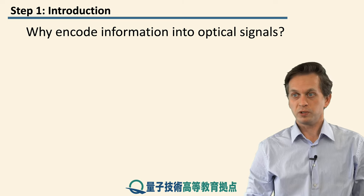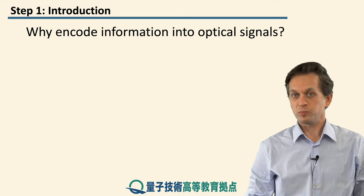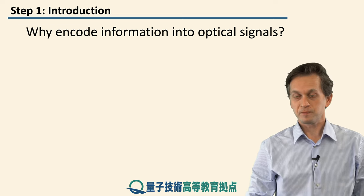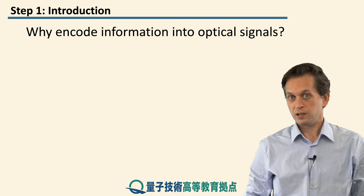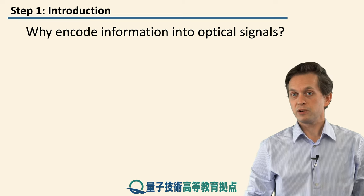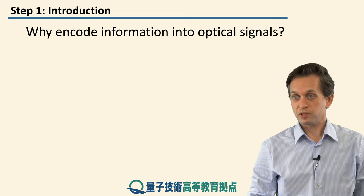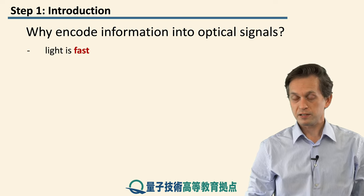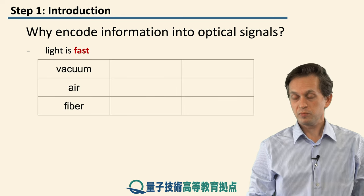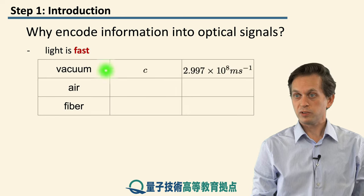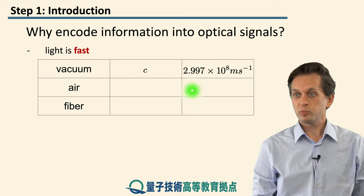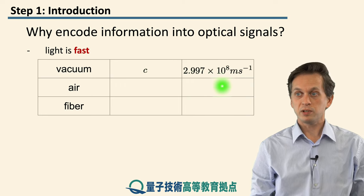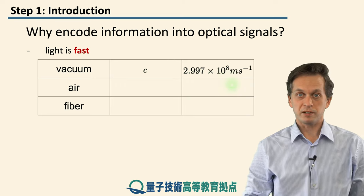Why do we want to encode information as optical signals? Well, for one, light is a very good carrier of information because it's fast. How fast exactly? Well, in vacuum, we denote the speed of light by C, and it's given by 2.997 times 10 to the 8 meters per second.